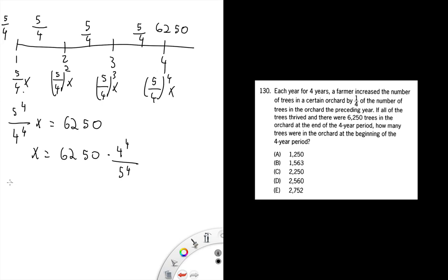You can also do this question by divisibility. Notice that we're going to end up with a number divisible by four because this is being multiplied by four. You only have two options that are divisible by four - D and E.